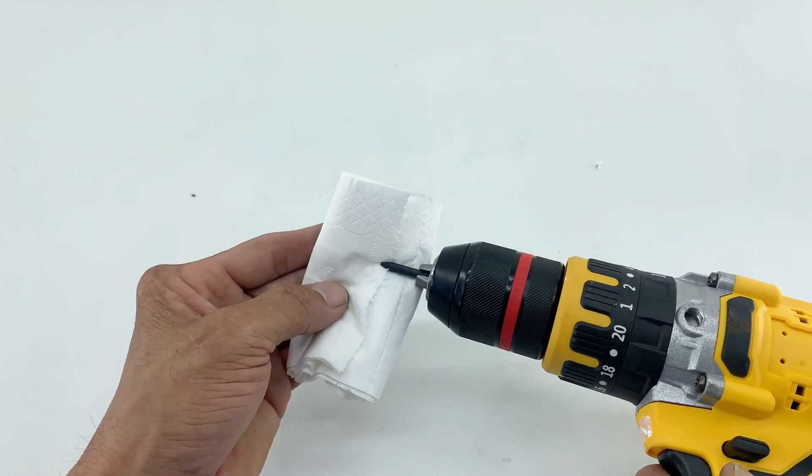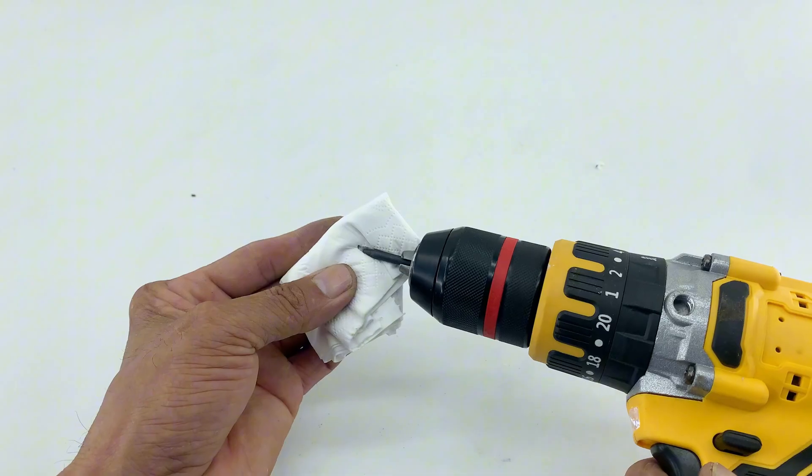Once sharpened, I clean the tip with paper while it's still spinning to remove any residue.